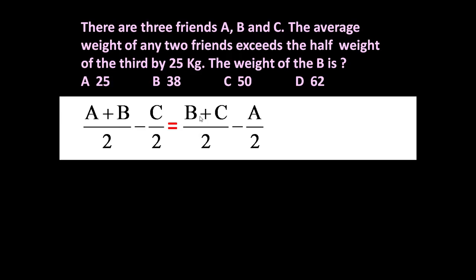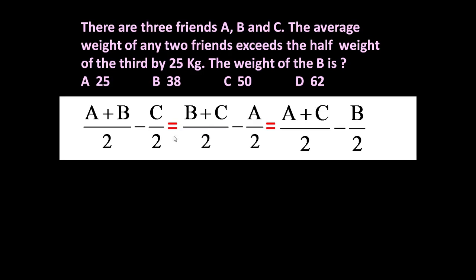The two friends may be B and C: (B + C) / 2 minus A / 2. This is equal to (A + C) / 2 minus B / 2. Because he is saying the average weight of any two friends exceeds the half weight of the third by 25 kg — meaning each of these differences equals 25 kg.